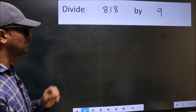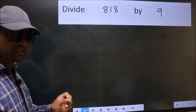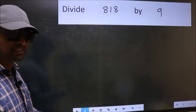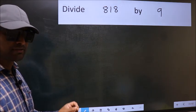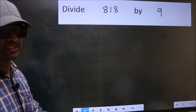Divide 818 by 9. While doing this division, many do this mistake. What is the mistake that they do? I will let you know. But before that, we should frame it in this way.